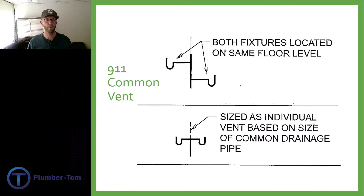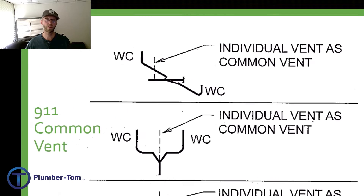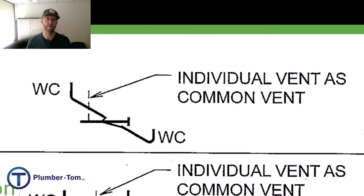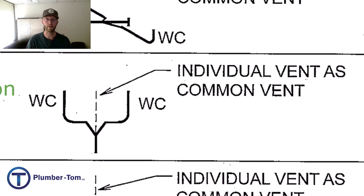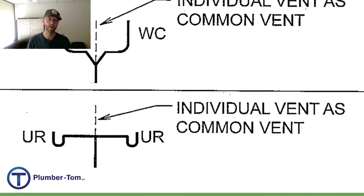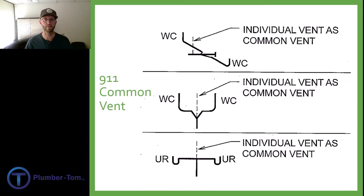Here are a few more diagrams of common vents. Both fixtures are located on the same floor level — they may be at different elevations or the same elevation. These can be used for back-to-back toilets with a common vent coming off in the middle of the horizontal branch. This can also work vertically for back-to-back toilets on a stack, or even urinals — you can common vent toilets and urinals as well. Here's an example of common vented lavs back-to-back in a series.